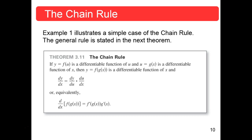Here's the chain rule. If y equals some function of some variable — they put u in here, it doesn't matter what it is — y is a differentiable function of u, but the variable u is also a differentiable function of x, a different function g of x. Then y equals f of u equals f of g of x. So this is a composite function. If f is differentiable and g is differentiable, then f of g is differentiable with respect to x, because that's the innermost independent variable. U is sort of an intermediate variable.